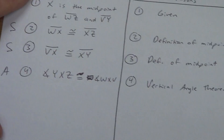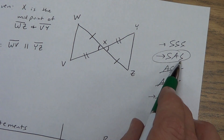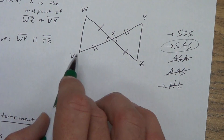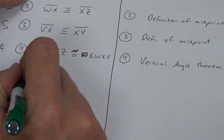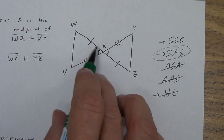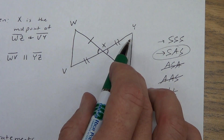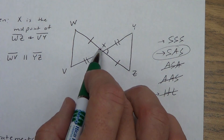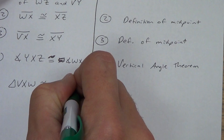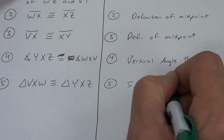Remember, the order in the proof doesn't really matter — it's the order in the picture that matters, and that is side-angle-side order. So we're good. Now we need to name some congruent triangles. Triangle VXW is congruent to triangle YXZ. Our reason is side-angle-side congruence postulate.